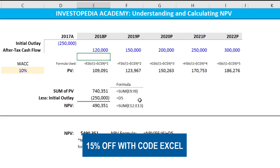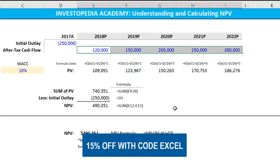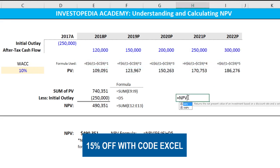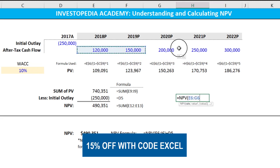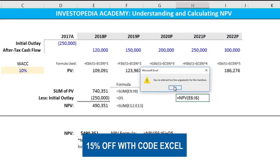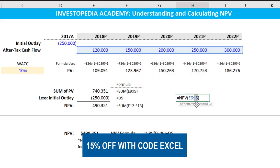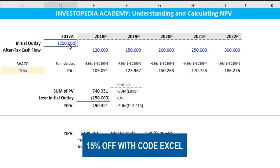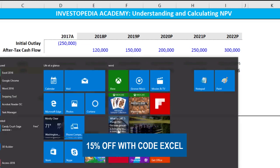If we were to insist upon putting this all in one line item, which we don't recommend, Excel does include a built-in NPV formula. A common mistake is people will take these cash flows and then get an error, because you have to remember that you need to add back the initial outlay. When we do that, we can see that these numbers end up matching.